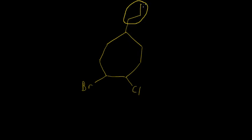There are one, two, three carbons in this group, so three is 'prop' and it's an alkyl group, so it's going to be propyl. And then we see that there's a bromo and a chloro.